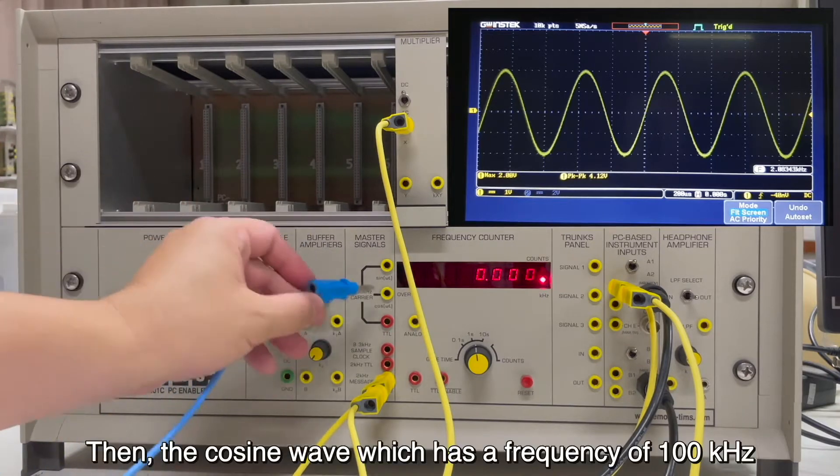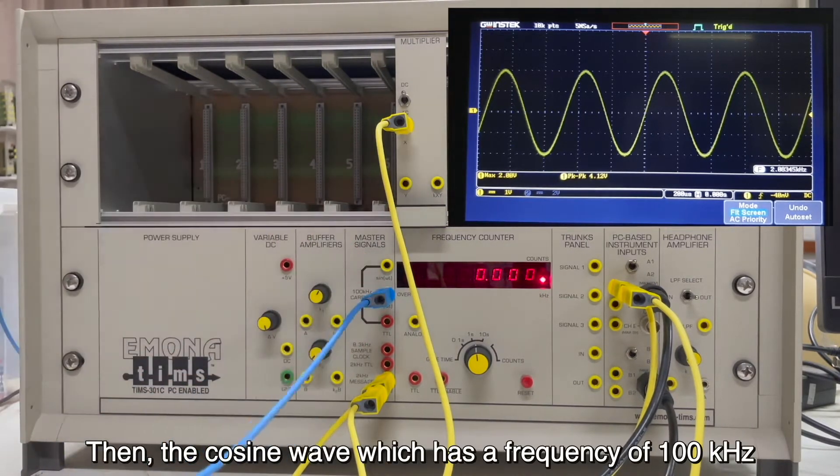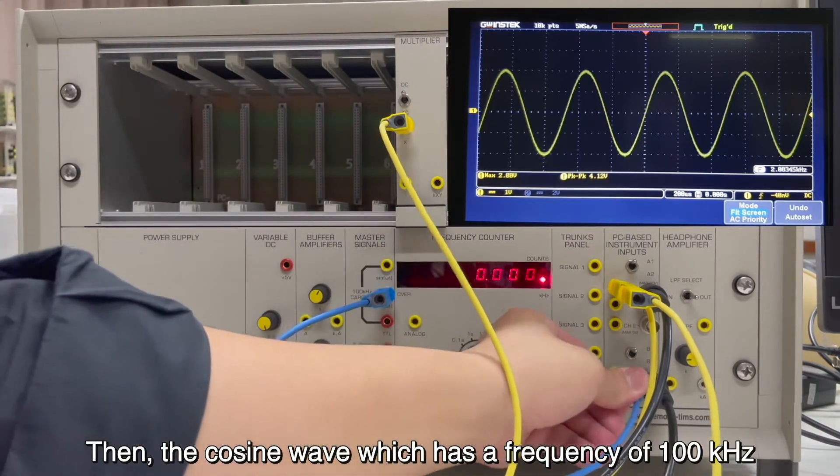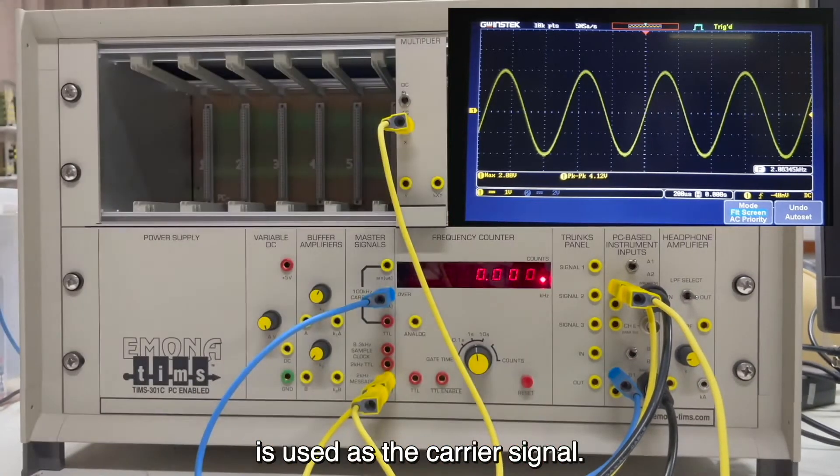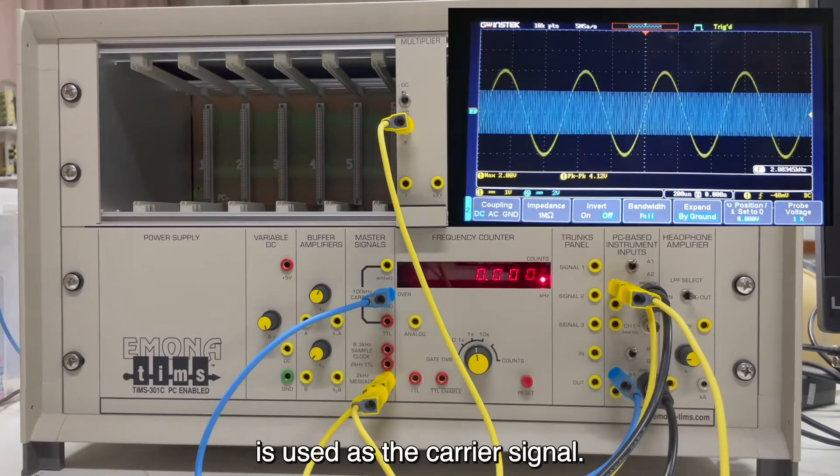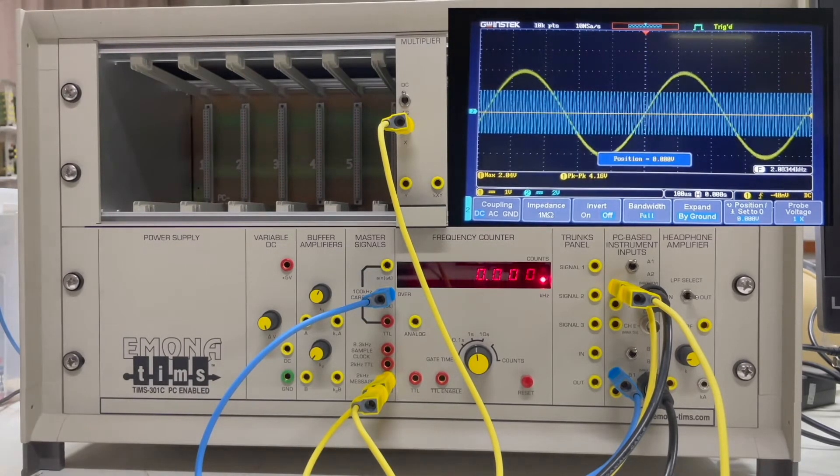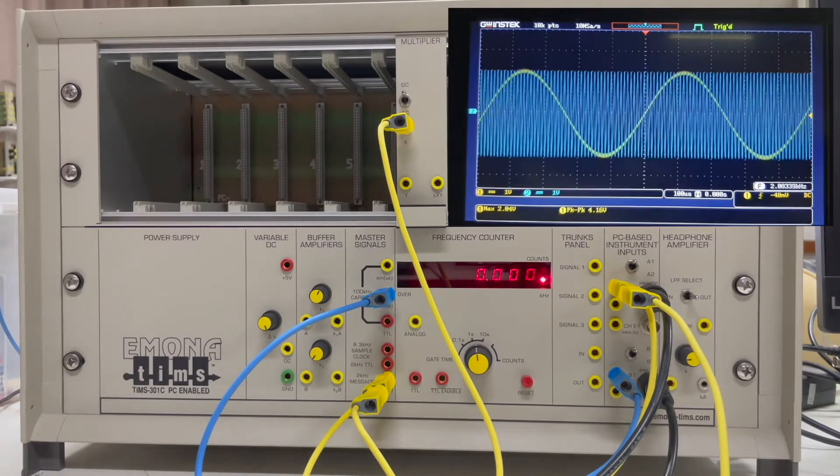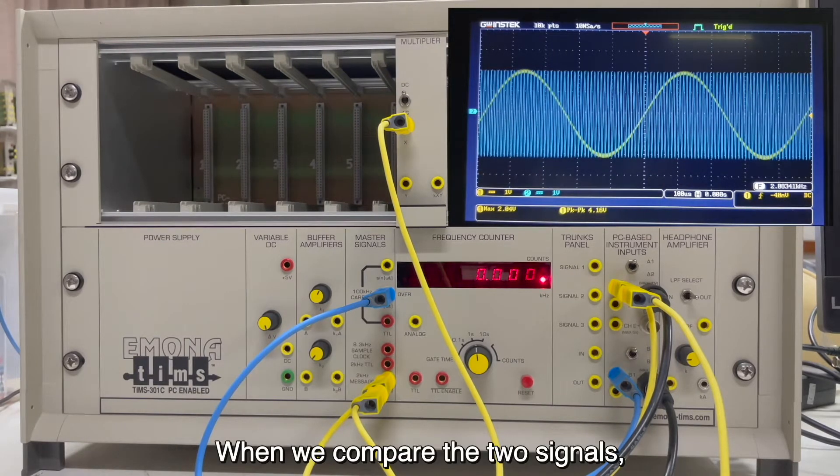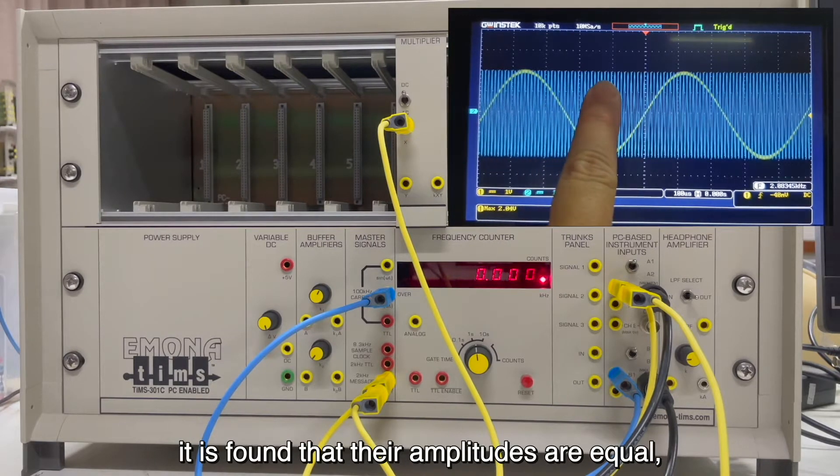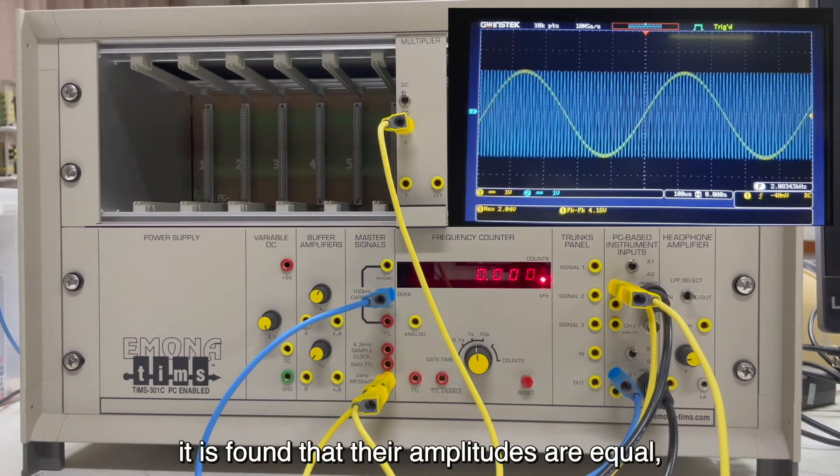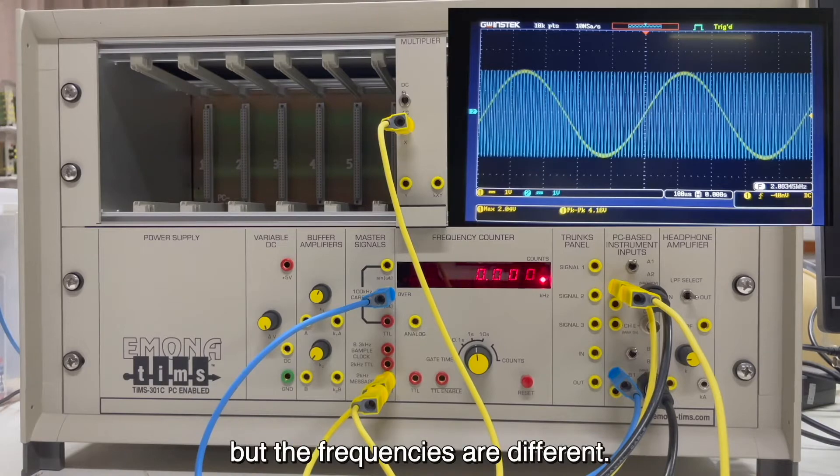You will see the sine waves that have the maximum amplitude and the peak to peak are 2 volts and 4 volts respectively. Then, the carrier sine waves which have a frequency of 100 kHz is used as the carrier signal. When we compare the two signals, it is found that their amplitude is equal but the frequencies are different.